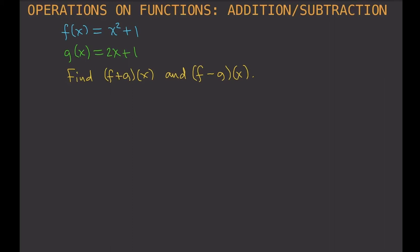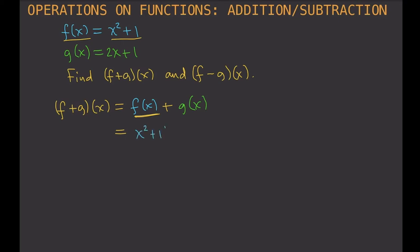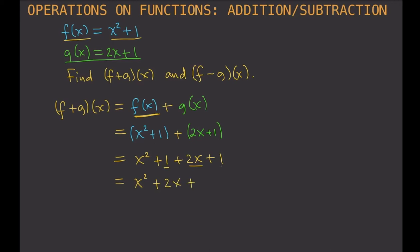So f plus g of x is just equal to f of x plus g of x. We'll simply make substitutions. f of x is x² + 1, and g of x is 2x + 1. Simplifying, we get x² + 2x + 1 + 1, which gives us x² + 2x + 2. That is f plus g of x.